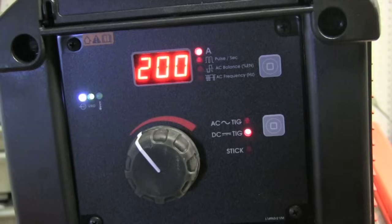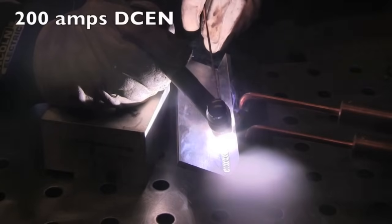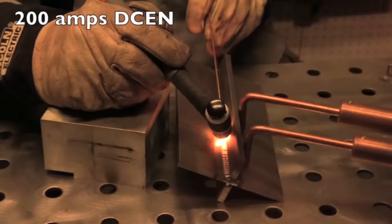This machine also has pulse capability. We'll get into that in another video. For right now, I'm going to crank up the amperage to 200 amps DC EN for steel.